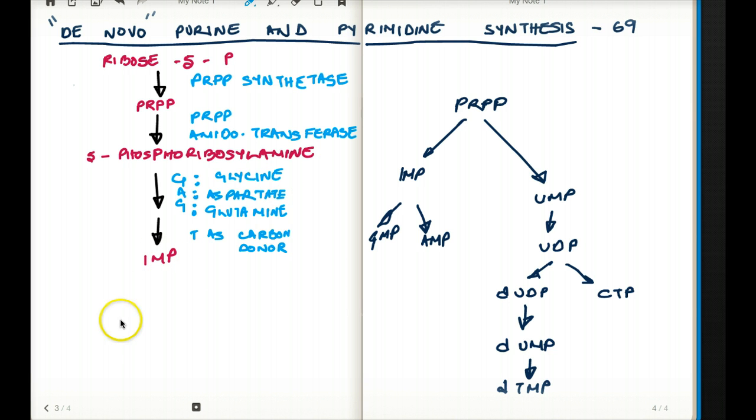From IMP, we get GMP and AMP. And we also use glutamine to make GMP in this step, and we use aspartate to make AMP at this step. It's easy to remember because glutamine starts with G and GMP, and aspartate starts with A and AMP. So this is how we get our guanine and adenosine from the purine synthesis.